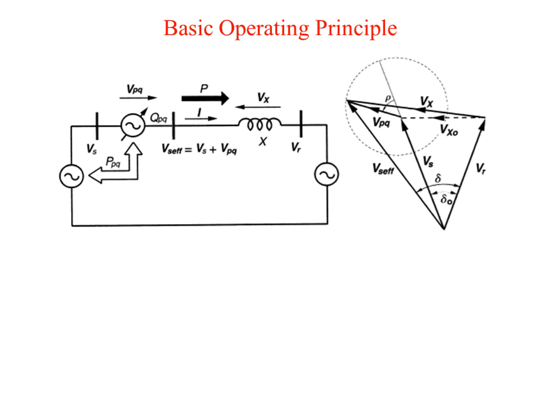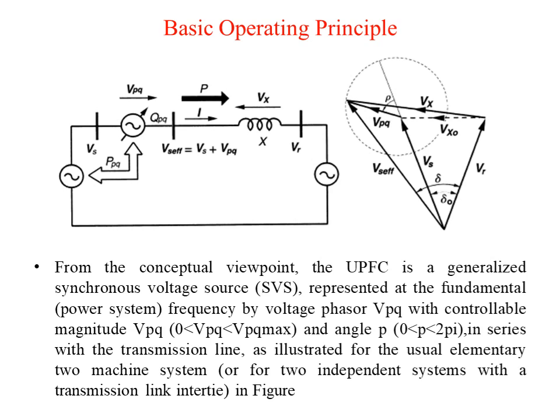Now the basic operating principle: this is the basic diagram of UPFC for a two-machine system, and the vector diagram is shown in figure B. From the conceptual point of view, the UPFC is a generalized synchronous voltage source. It is a voltage source converter represented at fundamental frequency by voltage phasor Vpq, with controllable magnitude Vpq where 0 < Vpq ≤ Vpq_max, and angle Rho where 0 < Rho < 2π.